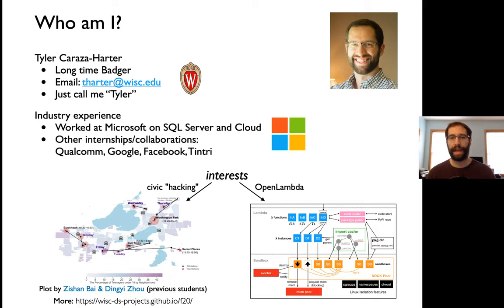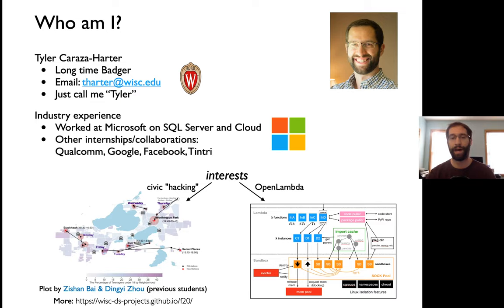One of my interests is civic hacking — not hacking in a negative sense of breaking into systems, but building tools that help local government. For example, I have a project done by previous students Zeeshan and Dingyi, who looked at a mobile library in Madison called the Dream Bus. The Dream Bus drives around different places with books, which is useful during a pandemic and for people without transportation to a regular library. They analyzed how we could optimize its routes, and there are lots of different projects students have done like that.